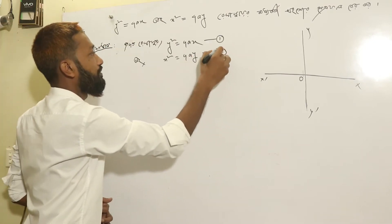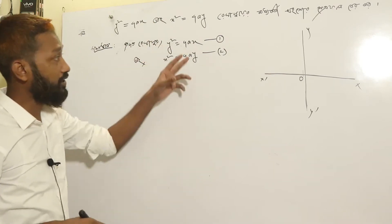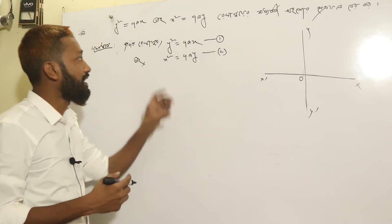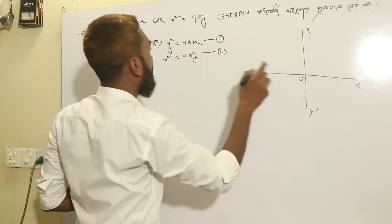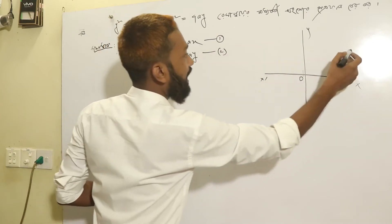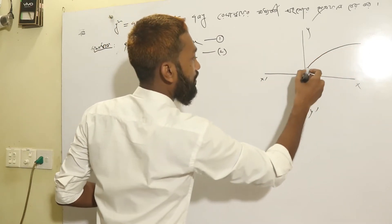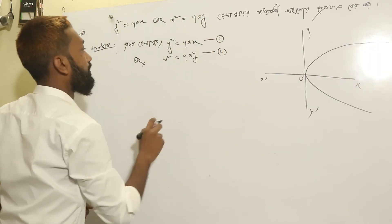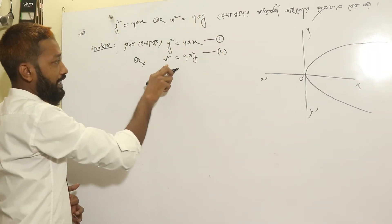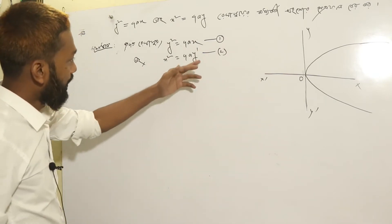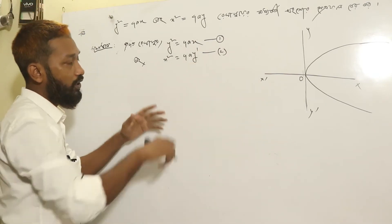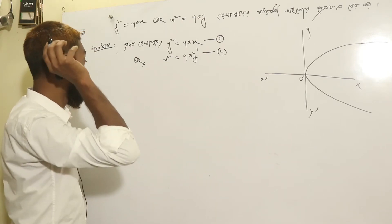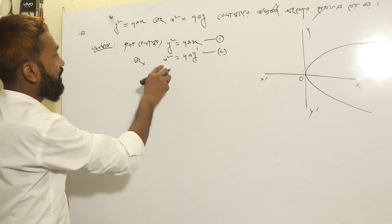I will give you two numbers. What is the first number? The first number is 0,0. What is the second number? The second number is 1. We will give you the number of y. What is the number of y? The second number is 0,0.